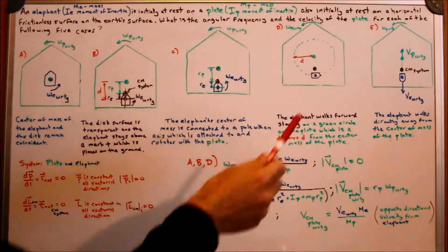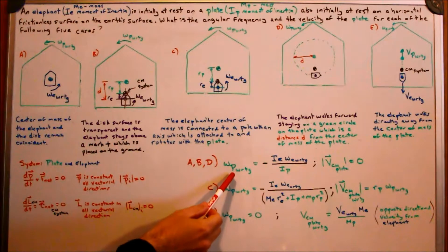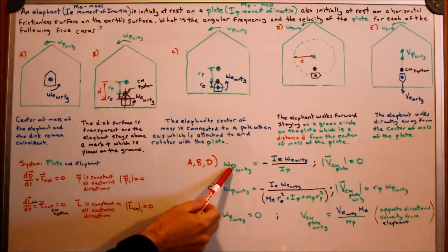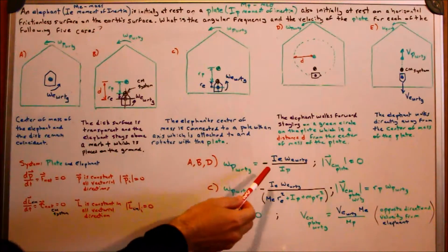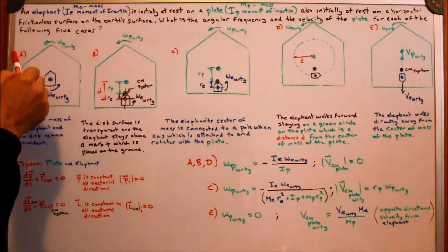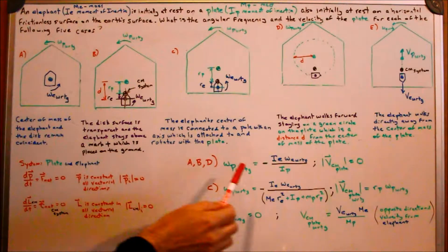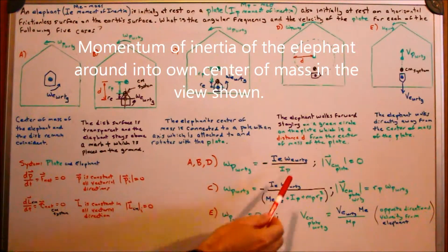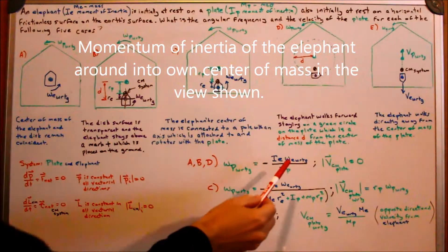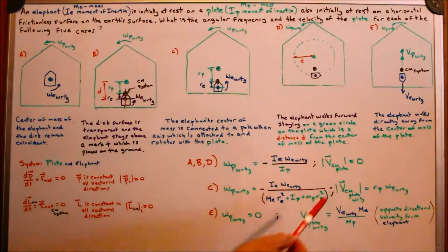The solution for cases A, B, and D: the angular frequency of the plate with respect to ground — drawn in the counterclockwise direction — is actually minus, meaning it's in the clockwise direction. It equals the moment of inertia of the elephant times the angular frequency of the elephant with respect to ground, divided by the moment of inertia of the plate. And in all those cases, the velocity of the center of mass of the plate is zero.